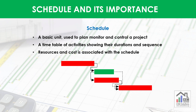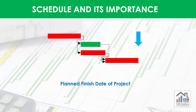Now let's see some uses of the schedule. Schedule gives the planned finish date of a project. This date is important for the client to know the feasible completion date of the project, and it is also important for the contractor or executor as he will plan his work to complete on or before this planned finish date of the project.